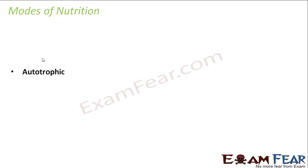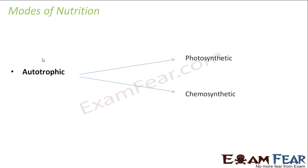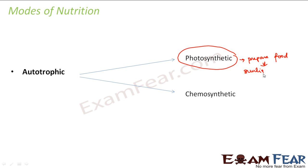In autotrophic nutrition, organisms prepare their own food. There are two classifications within this. The best examples are green plants, which prepare their own food by the process of photosynthesis — in the presence of sunlight and with the help of the green pigment chlorophyll. These are called photosynthetic organisms. The other kind of autotrophic organisms are chemosynthetic — the word 'chemo' is derived from 'chemical'.